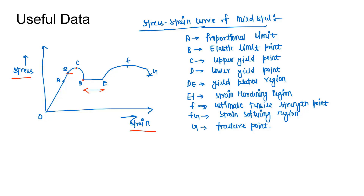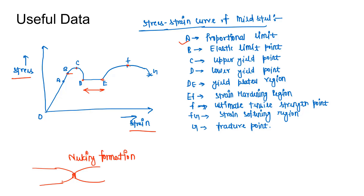The region E to F is termed the strain hardening region, because if we increase stress beyond point E we will see some amount of strain increase. At point F, this is the ultimate tensile strength point, where necking formation begins. If we increase stress beyond point F we reach point G, the fracture point, and the region F to G is termed the strain softening region.